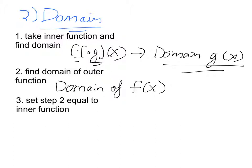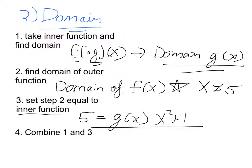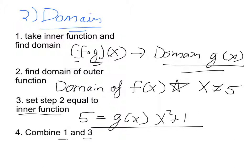So this is where it gets a little confusing. You have both domains of g of x and f of x. For step 3, you're going to set the domain restriction from step 2 equal to the inner function. So if the domain of f of x says x cannot equal 5, you write 5 equals g of x, then write out the function for g of x — say x squared plus 1 — and solve for x. Step 4 is combining your answers from step 1 and step 3. That's going to be your domain.